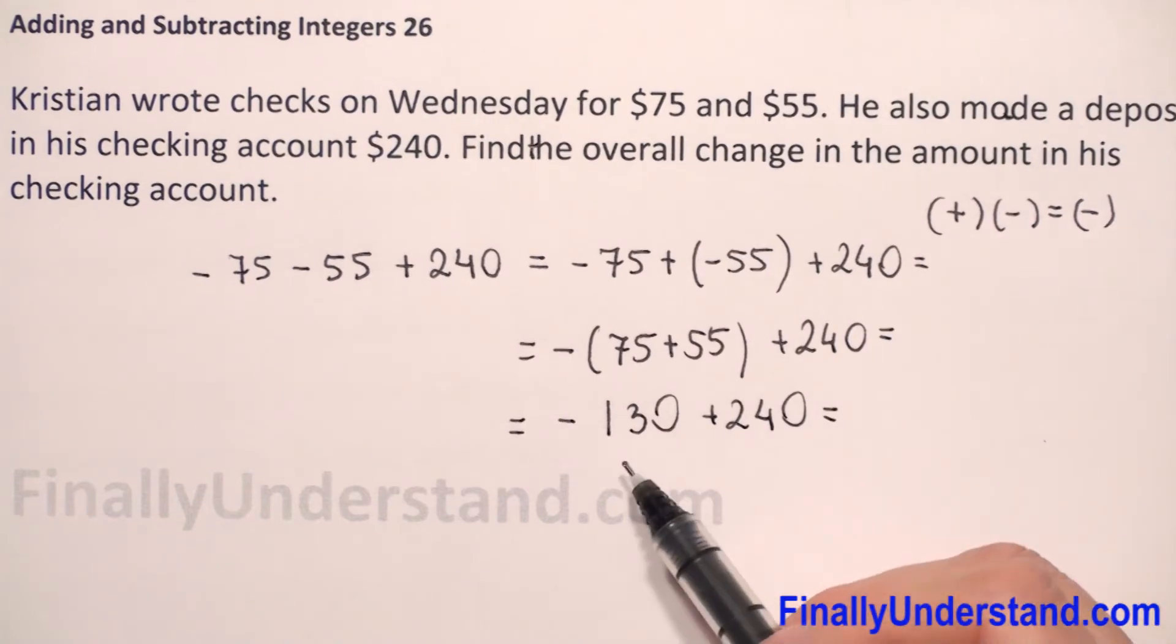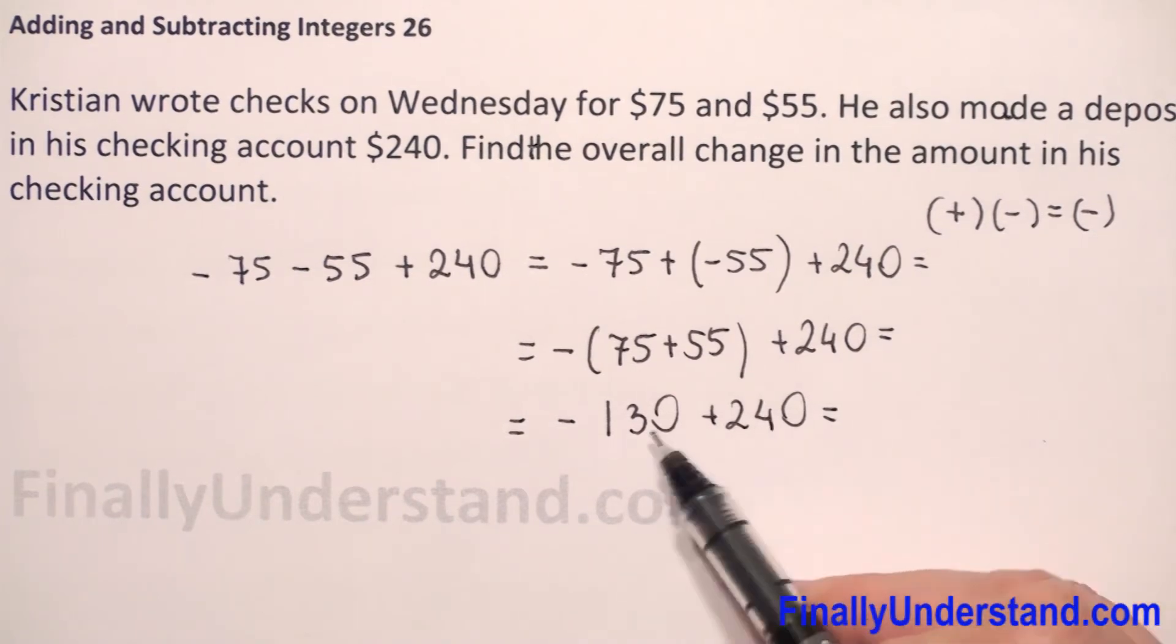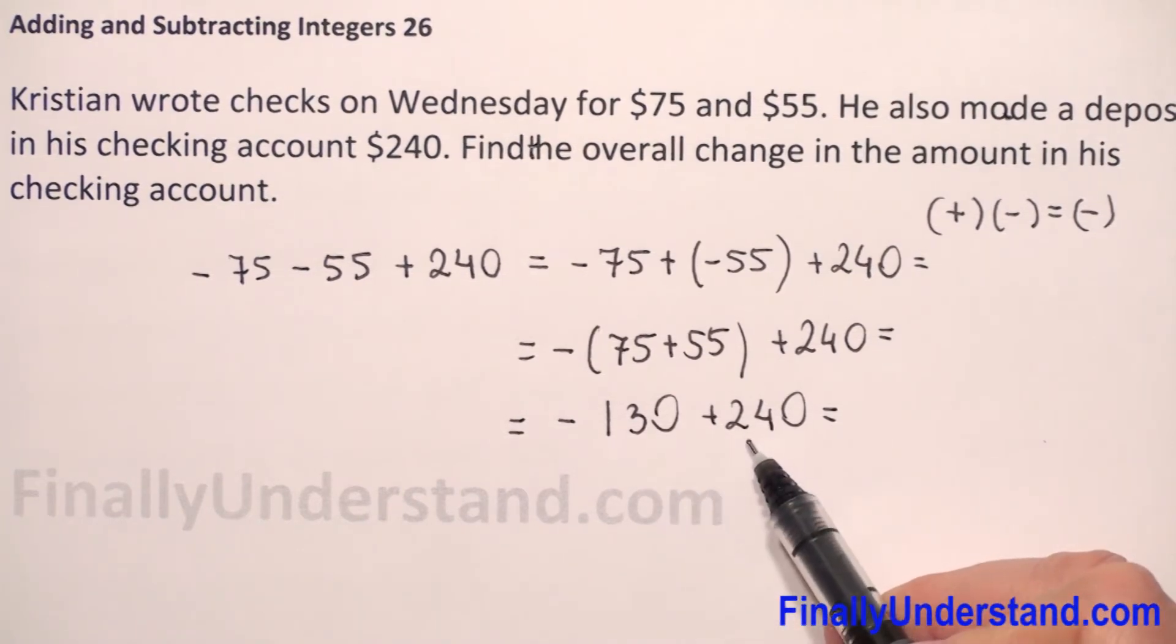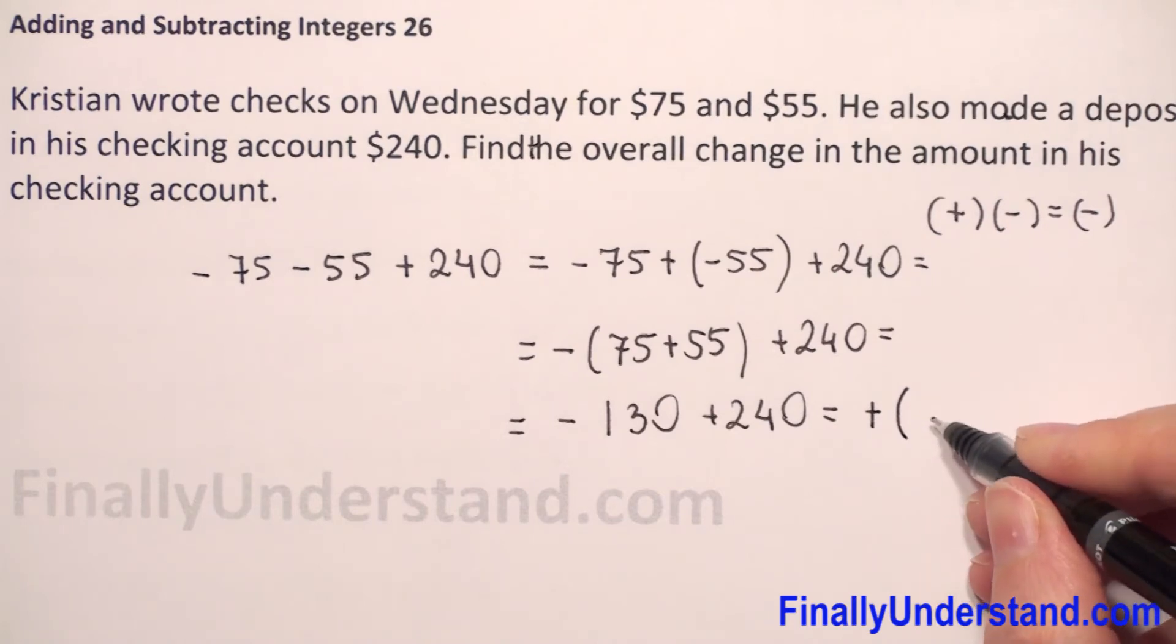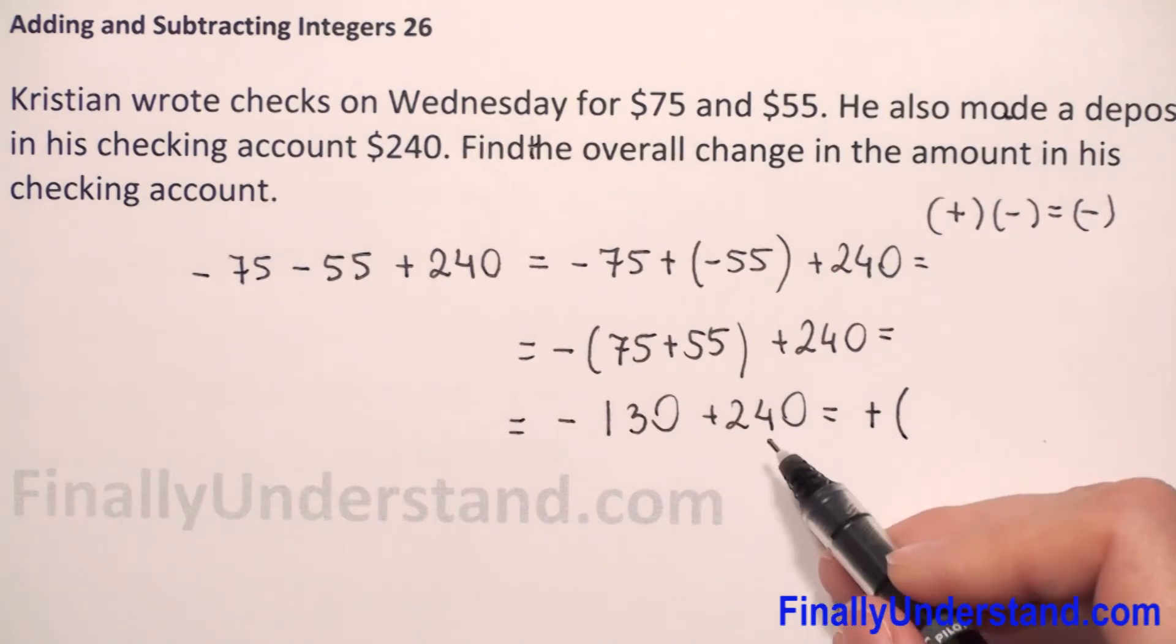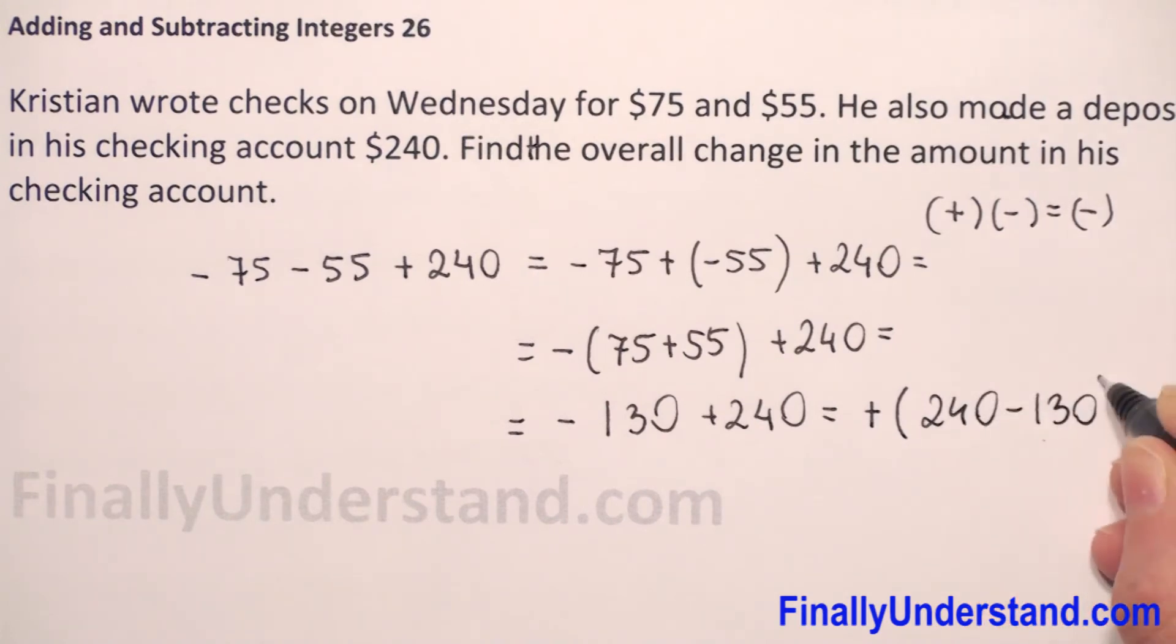Now we have to add two integers with different signs, negative and positive. First we check which of these two numbers is greater. 240 is greater than 130. We check the sign before the greater number is positive, so we copy positive sign and in parenthesis we just subtract from the greater number the smaller, so 240 minus 130.